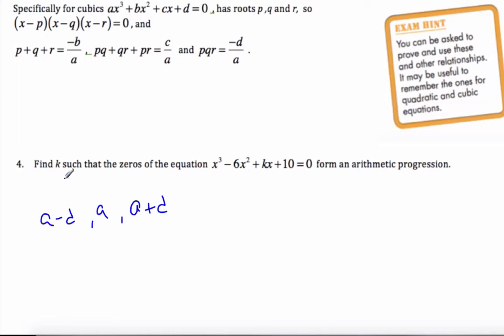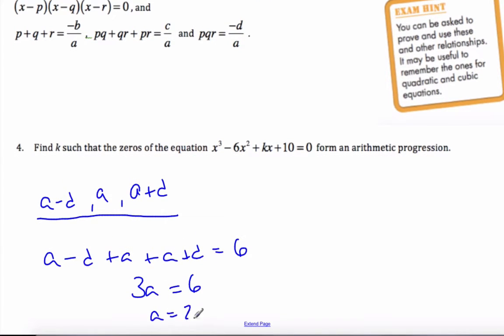So I know the sum of these, so here are my roots, my zeros: a minus d plus a plus a plus d has to be minus b, so that's minus negative 6 over 1. Simplifying this, I get 3a equals 6, and so a is equal to 2. That's convenient.